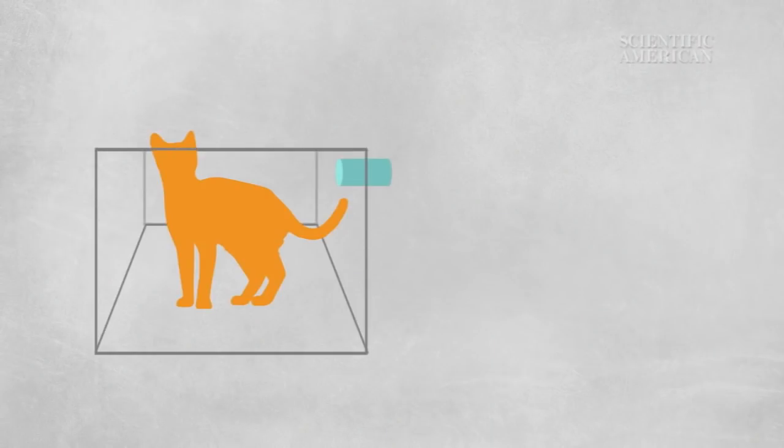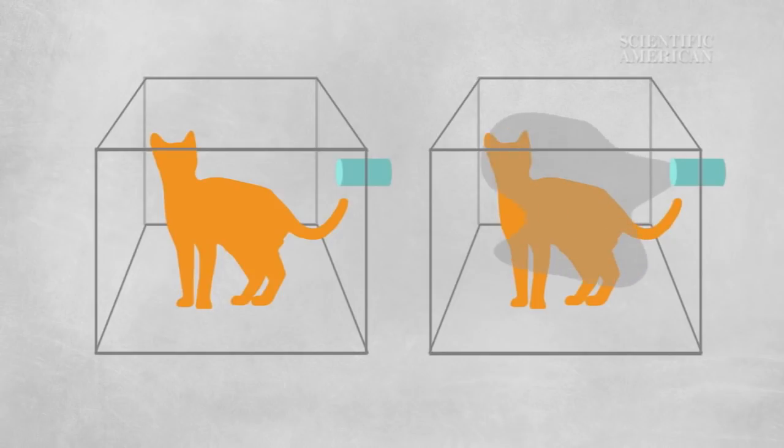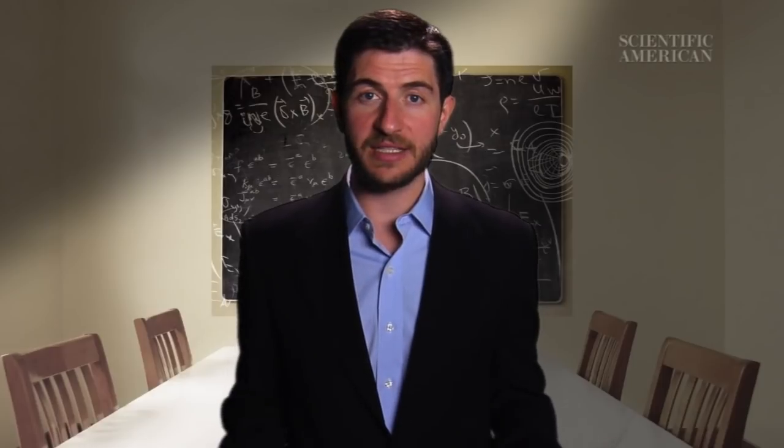And this brings us back to the cat that's both alive and dead at the same time. As it's usually told, a cat and a vial of poison are sealed into a box. Then, a quantum event happens with a probability of 50% that breaks or does not break the vial of poison and kills or does not kill the cat. So is the cat still breathing?